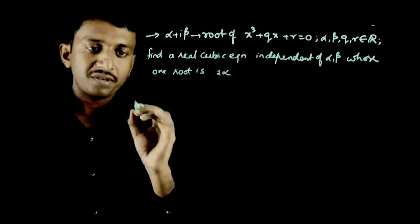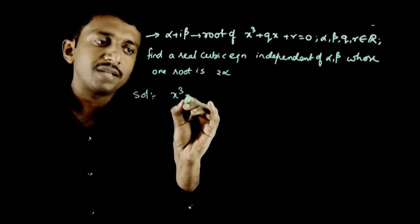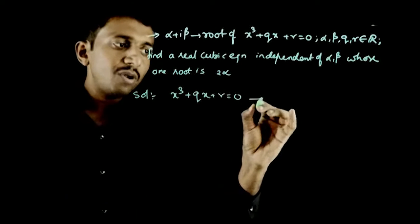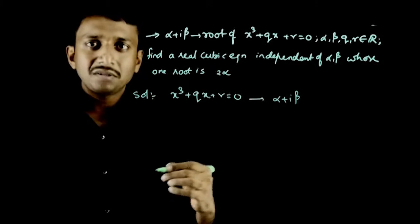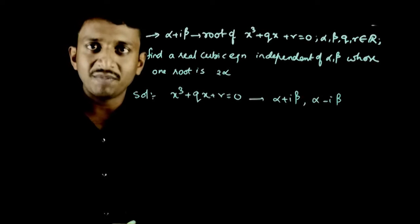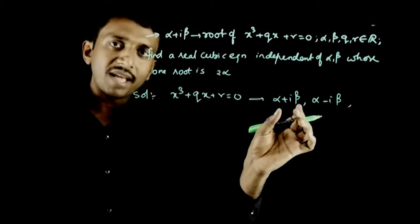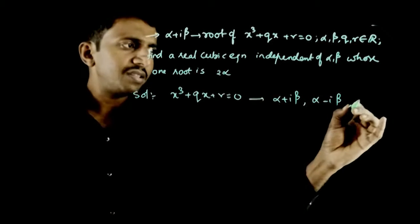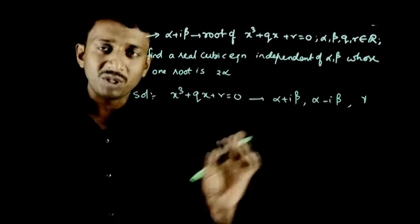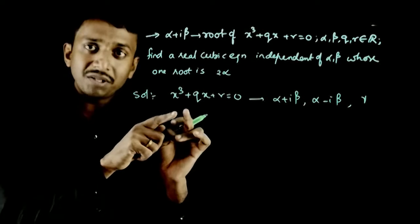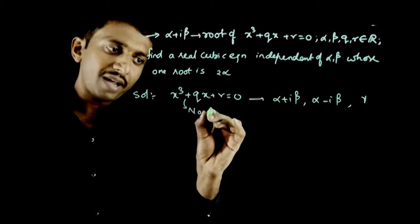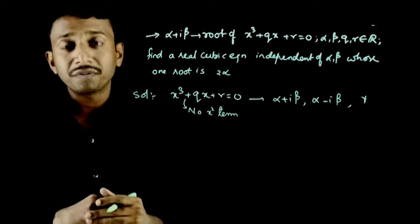Let us analyze this equation. x³ + qx + r = 0 is a cubic equation with root alpha + i*beta. Since the coefficients are real, alpha minus i*beta is also a root. We can observe that this equation has no x² term — meaning the x² coefficient is 0.